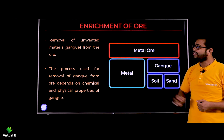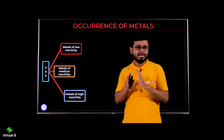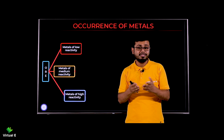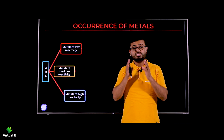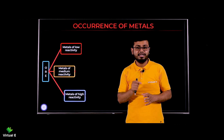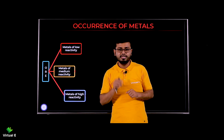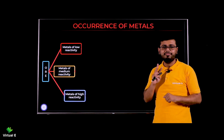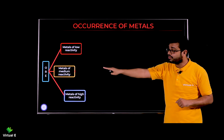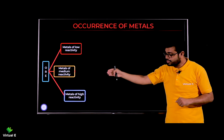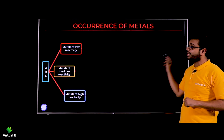Now since there are highly reactive, moderately reactive, and least reactive metals, the methods to extract each are different because they react differently. So there are three ways to extract metals: metals of low reactivity, metals of medium reactivity, and metals of high reactivity. Let's start with metals of low reactivity.